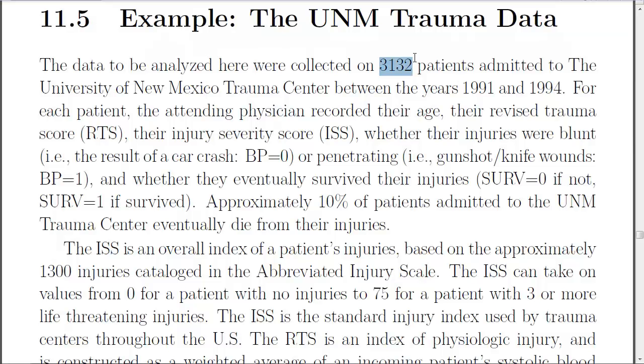In the early 90s, we collected over 3,000 patients that were admitted to the trauma center. You're only admitted if you are in seriously bad shape - car accidents, bar fights, that sort of thing. For each patient, the attending physician recorded the person's age, their revised trauma score, their injury severity score, and whether the injuries were blunt or penetrating. Blunt is like a car crash where you get slammed into, and penetrating is when your skin is broken, as in a gunshot or a knife wound.